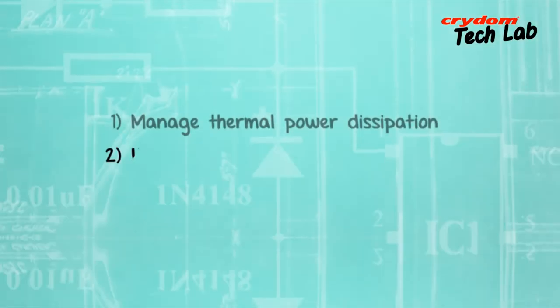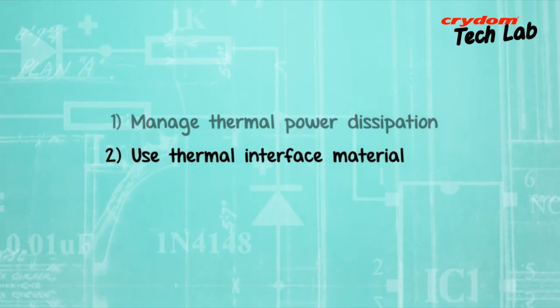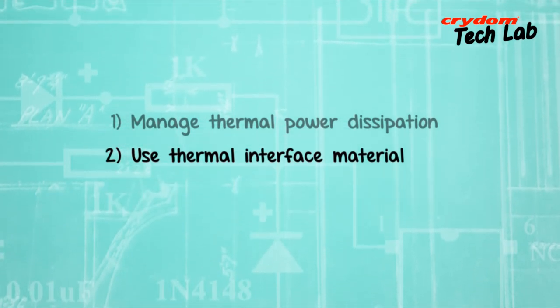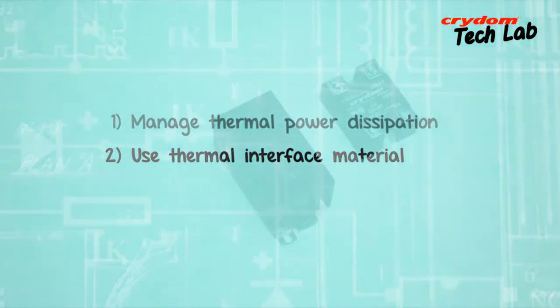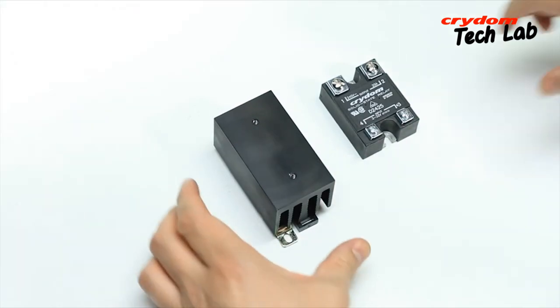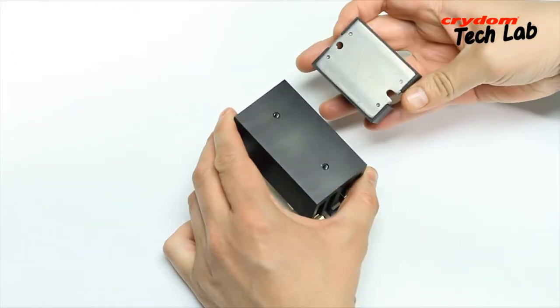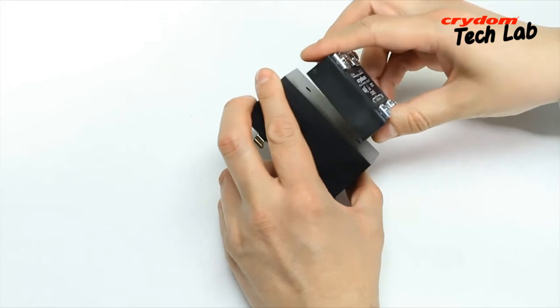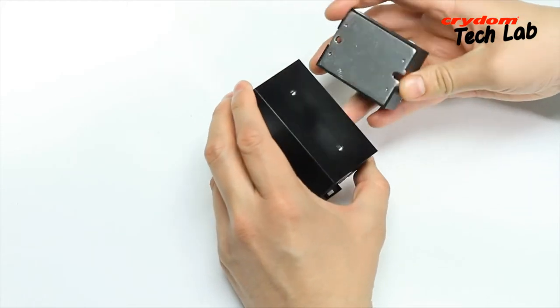Rule 2 is to always use thermal interface material. Once the SSR and heat sink are selected, the next step is to place a thermal interface material between the SSR and flat heat sink surface prior to SSR mounting.